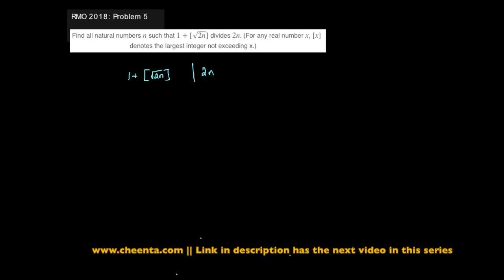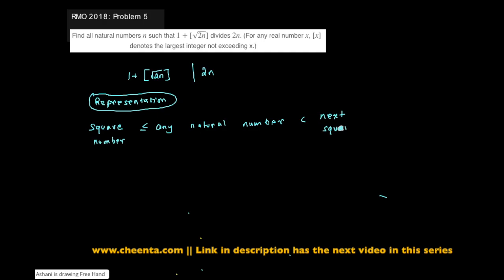All such natural numbers such that this happens. The key idea is in all of these problems, something called representation. And this is a very simple idea. Any natural number is always between a square number and the next square. This is a very simple principle but is often very useful.